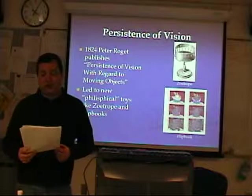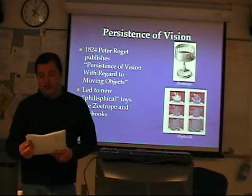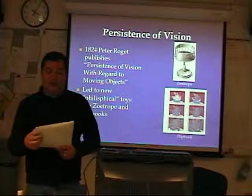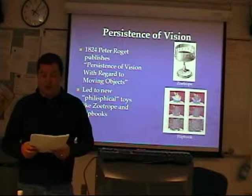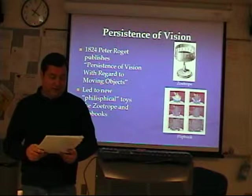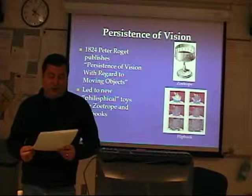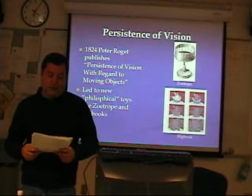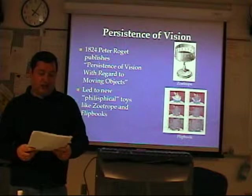In 1824, Peter Roget published a paper called 'The Persistence of Vision with Regard to Moving Objects.' This paper describes the phenomenon in human vision where an image lingers even after the light from the source has ceased. If this did not occur, we would see a pronounced flicker in all films and on televisions and monitors. This phenomenon makes animation possible. It led to numerous philosophical toys during the 19th century, including the zoetrope and the flipbook. The zoetrope consisted of a spinning cylinder with slits and a strip of paper with frames inside; when you spin it and look through the slits, you see the images animate. This can be used for cycling animation like running and jumping.